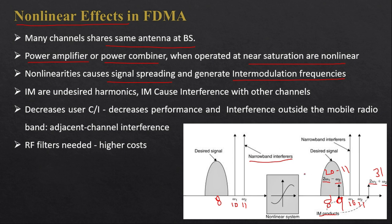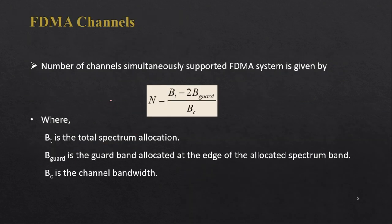Intermodulation products are undesired harmonics — multiples of frequencies such as 10, 20, or 30 MHz — that cause interference with other channels. This interference decreases the carrier-to-interference ratio, reducing system performance. This mostly manifests as adjacent channel interference in FDMA, requiring RF filtering and increasing system cost.